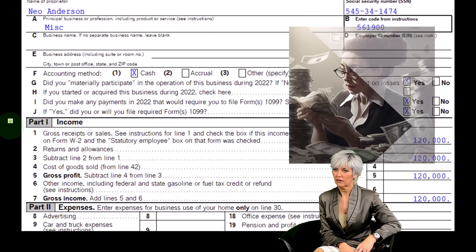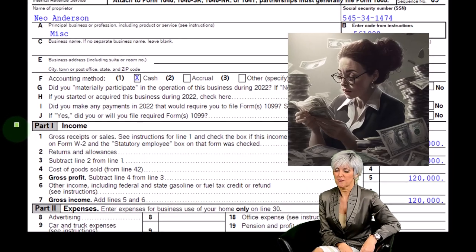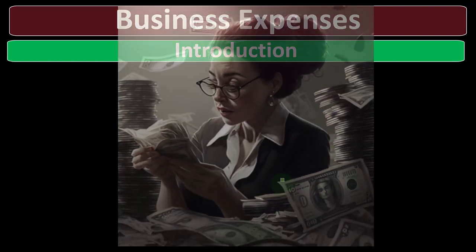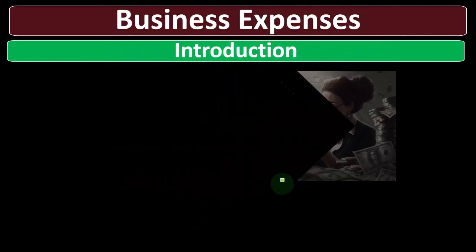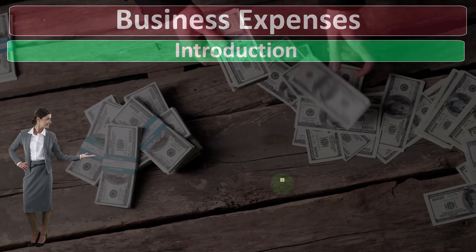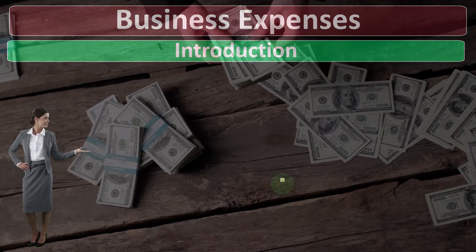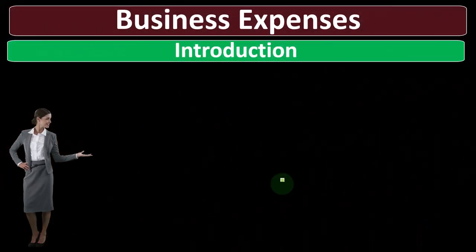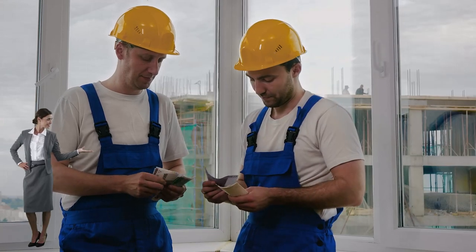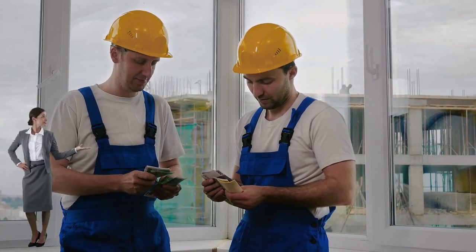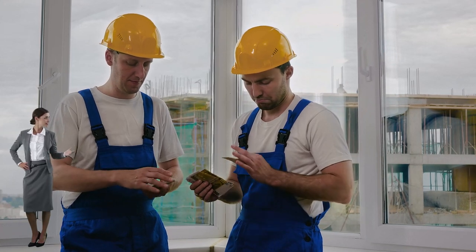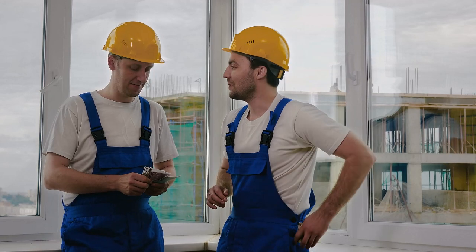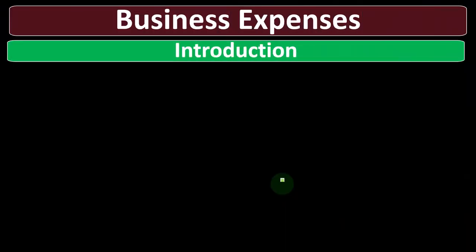Here's the income statement where we have income minus expenses. We're now looking at the expenses side of the Schedule C, which is in essence an income statement. We have the income minus the expenses. Although we're hoping that the income in total dollar amount is greater than the expenses, the expenses are often more confusing because there are many more categories of expenses than income.